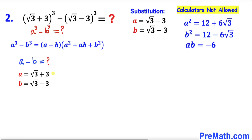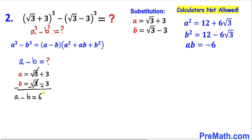Here are our a and b values. Let's go ahead and subtract the equations. Subtracting b from a, the square root of 3 terms cancel, and 3 plus 3 gives us 6. So therefore our a minus b value turns out to be 6.